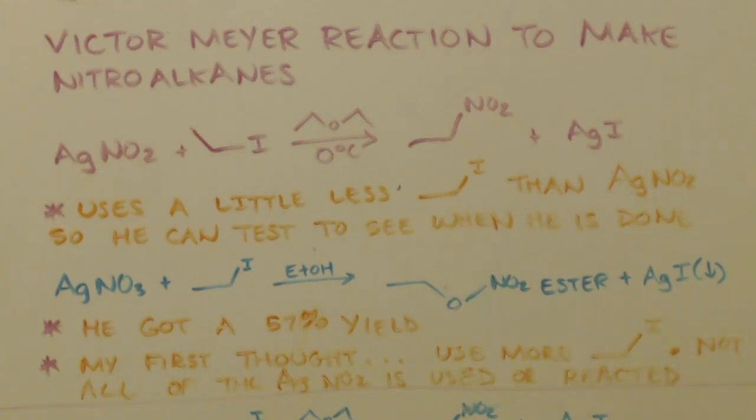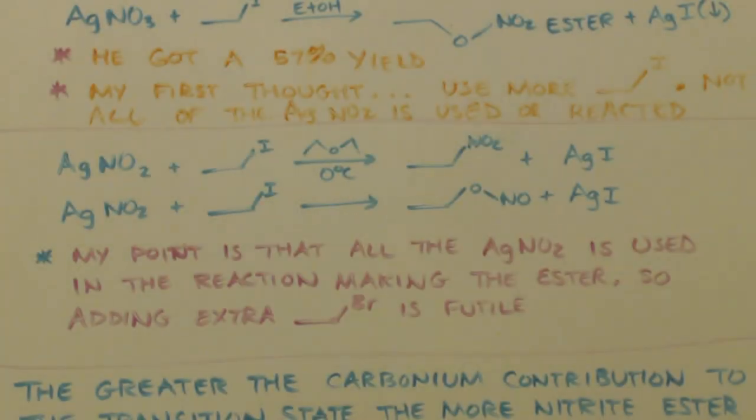But my first thought was add more ethyl iodide because you're not using all your silver nitrite. Now since then I found out that that equation up on top here, where it says he's making nitroethane, that's true, but there's actually two reactions taking place. This one that we already mentioned, but also this one.